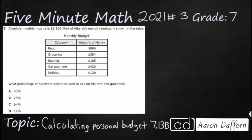So we've got Alberto's monthly income of $3,200, and part of his monthly budget is shown below: rent, groceries, savings, car payment, and utilities. Our question here is what percentage of Alberto's income is used to pay for rent and groceries.